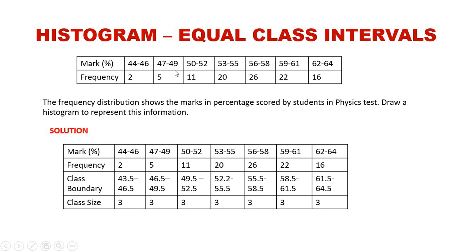The data shows: from 44 to 46 there are 2 students; 47 to 49 there are 5 students; 50 to 52 there are 11 students; 53 to 55 there are 20 students; 56 to 58 there are 26 students; and 59 to 61 percent there are 22 students.